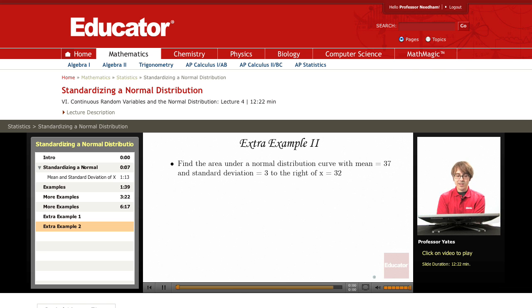Alright, our next example. We want to find the area under a normal distribution curve with mean equal to 37. So we know our mean equals 37. We know our standard deviation equals 3, and we want the area to the right of x equals 32.